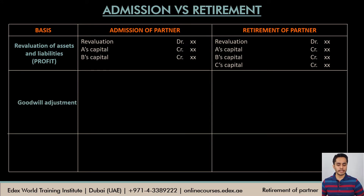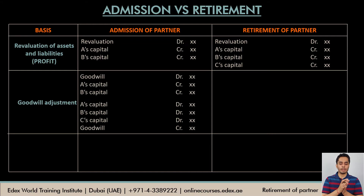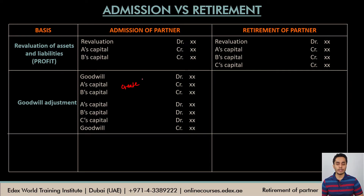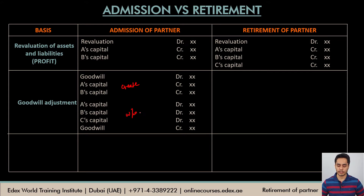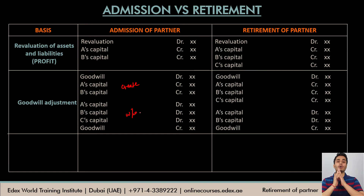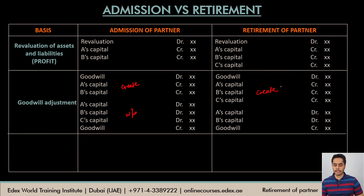For goodwill adjustment, the first entry at admission was to create goodwill by debiting goodwill and crediting the old partners, and the second entry was to write off goodwill by crediting goodwill and debiting all partners in the new profit sharing ratio. Similarly at retirement: first, create goodwill and credit all the partners. Second, write off the goodwill — but when writing off, debit only the continuing partners, not the retiring partner.